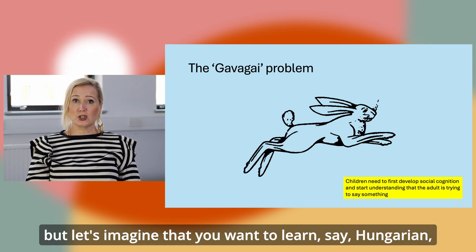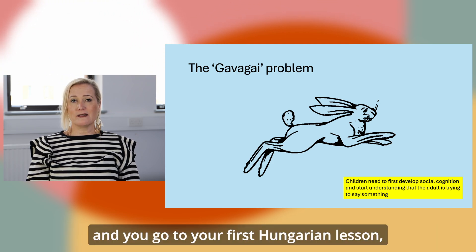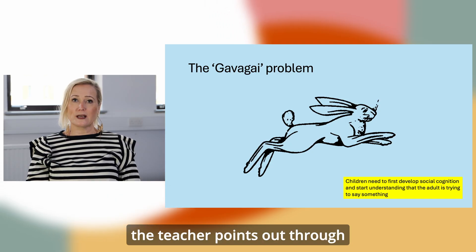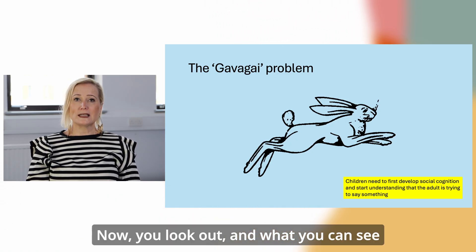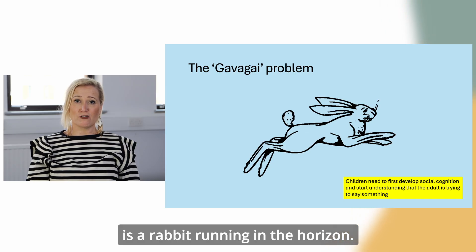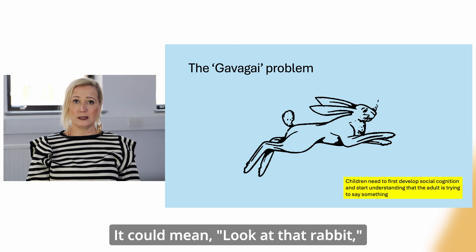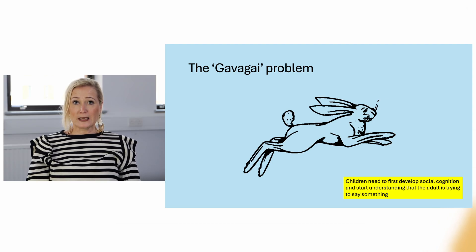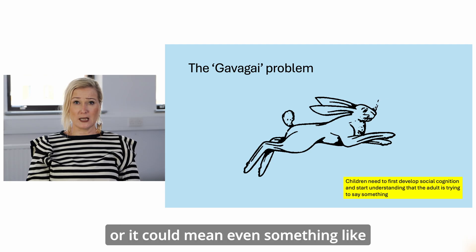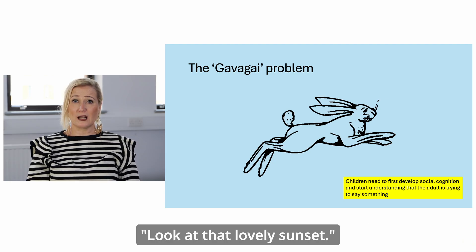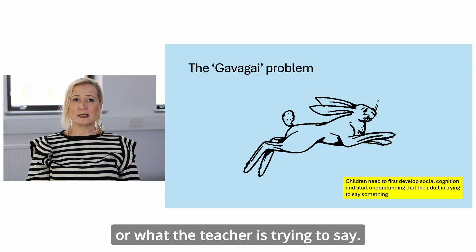Let's imagine that you want to learn Hungarian, and you go to your first Hungarian lesson, and during that lesson the teacher points out through the window and says 'Gavagai.' You look out, and what you can see is a rabbit running in the horizon. The problem you have is that you don't know what Gavagai means. It could mean 'look at that rabbit,' or it could mean 'look at those ears,' or 'a rabbit running,' or it could even mean something like 'look at that lovely sunset.' So you don't know what Gavagai is referring to, or what the teacher is trying to say.